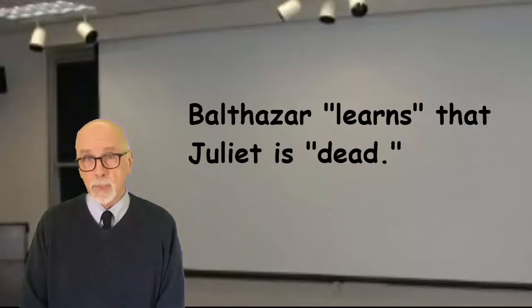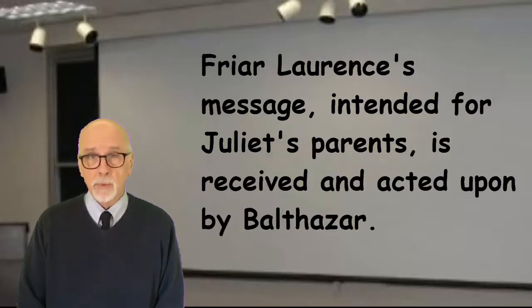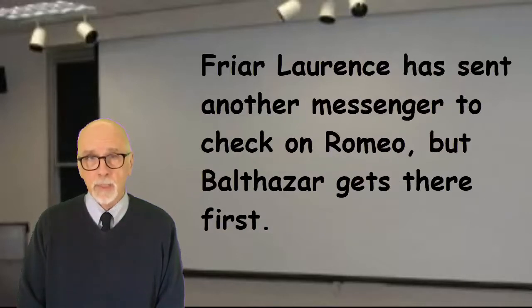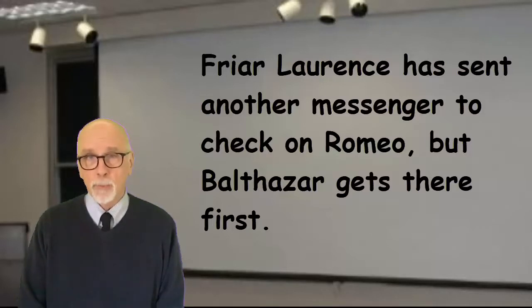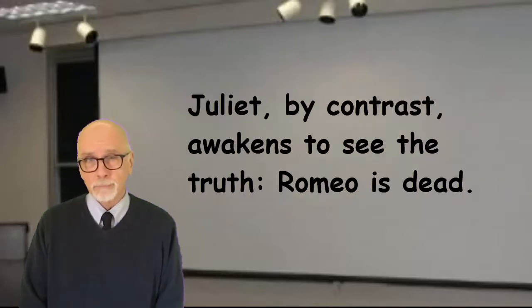Another important instance of communication failure happens when Romeo's friend Balthazar learns that Juliet is dead and rides to Mantua to inform Romeo. Of course, Juliet is not dead — she is only sleeping as a result of the potion given to her by the Friar. The Friar means for Juliet's parents to think she is dead, but his message gets to the wrong audience. Meanwhile, Friar Lawrence has sent his friend Friar John to Mantua to deliver a message to Romeo that Juliet is only sleeping, that she will be alive, and that all will be well. But Balthazar's message reaches Romeo before Friar John's message does. So thinking Juliet is dead, Romeo returns, sees her sleeping in the crypt, naturally assumes that she is dead, and drinks the poison. Then Juliet wakes up, sees Romeo dead, and stabs herself to death.